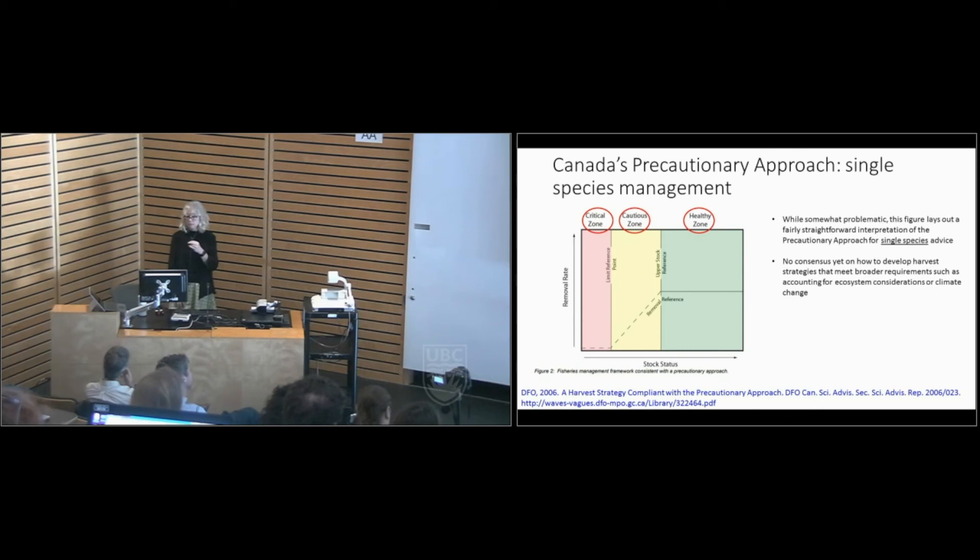So while somewhat problematic, which for reasons I won't go into, this figure does lay out a fairly straightforward interpretation of the precautionary approach for single species advice. We don't yet have a consensus on how to develop harvest strategies that meet broader requirements, such as accounting for ecosystem considerations, climate change, reconciliation, which Neil was speaking about before. There are two national working groups, which I'll touch on briefly at the end, on ecosystem considerations and climate change. Management strategy evaluation can help. Some of you might have seen my section's talk in April about different management strategy evaluation initiatives that we have in our group. But so far it's really been on a case-by-case approach as needed for various stocks and very specific questions, such as stocks where we know natural mortality has been rising and so we try to account for that in the harvest strategy. We haven't really had an overarching approach.